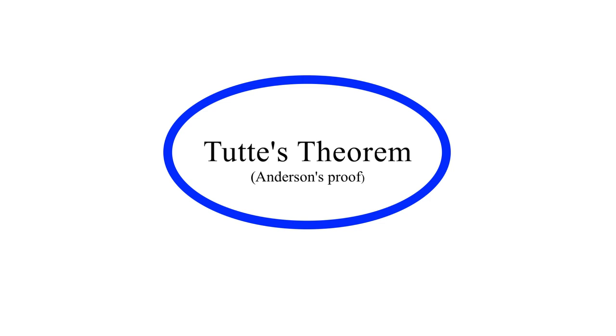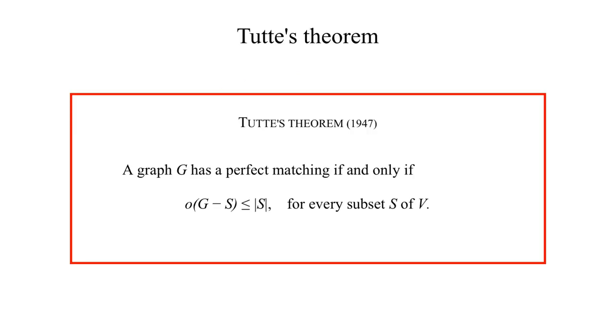Tutte's Theorem. Anderson's Proof. Tutte's Theorem: A graph G has a perfect matching if and only if the number of odd components of G minus S is at most the number of elements of S, for every subset S of V.